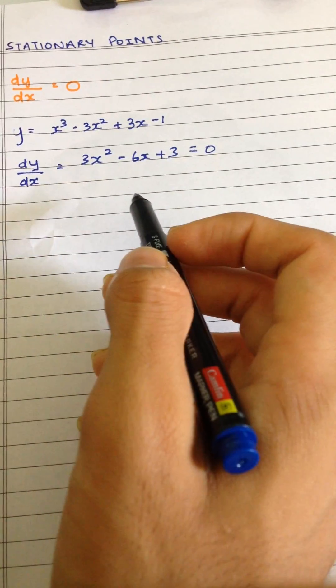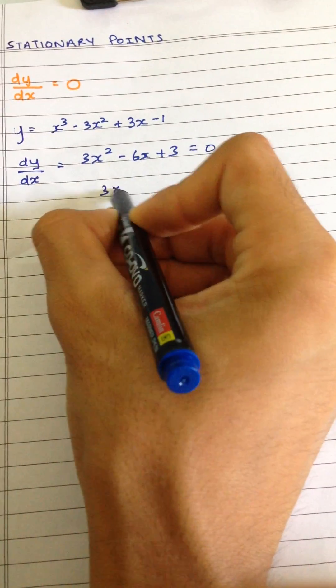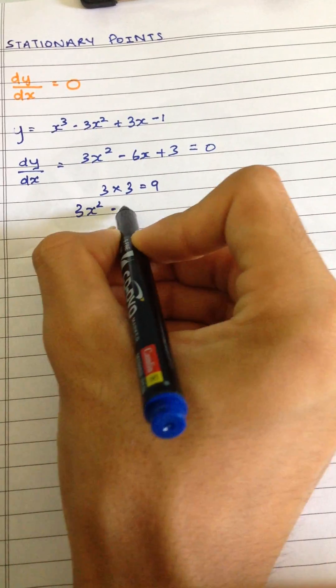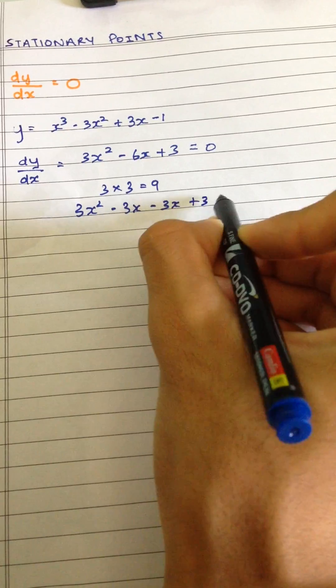So we can solve it to find the values of x. So 3 multiplied by 3 is equal to 9, 3x squared minus 3x minus 3x plus 3 is equal to zero.